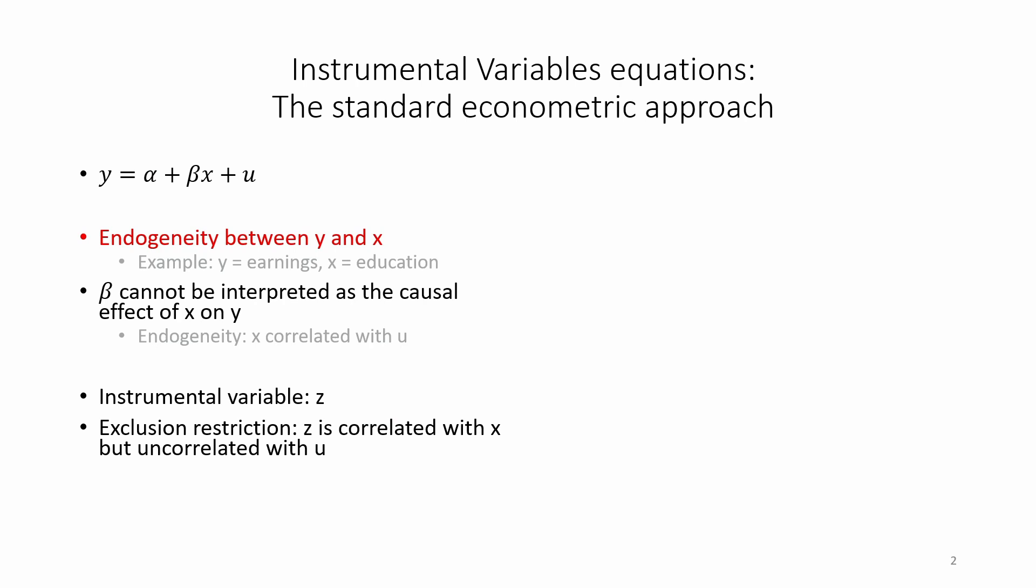One thing I don't like about this definition is that it suggests that you can use knowledge of correlations to obtain knowledge of causality, which is misleading and wrong. Instead, you need to bring causal knowledge when applying IV. Note also that you cannot actually check the exclusion restriction because true u is unobserved.